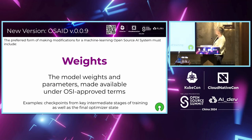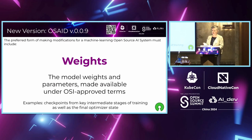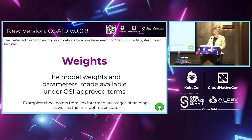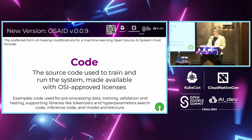Going into some details: weights means model weights and parameters made available under OSI-approved terms. There was some question about licensing weights — the MOF has said you can use an OSI-approved license, but we'll sort that out. There are examples of components that could be used to fulfill that requirement, which are in the text of the definition. For code, the source code used to train and run the system is made available under an OSI-approved license — software already has OSI-approved licenses in place that you can find on the website.